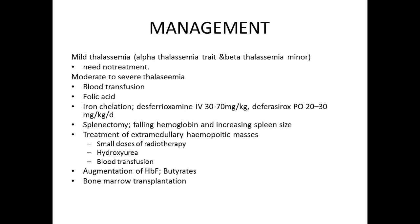When the spleen becomes hugely enlarged or the patient goes into repeated hemolytic crisis, splenectomy is advised. When hemoglobin is falling with increase in spleen size, splenectomy is recommended, along with appropriate vaccinations. For extramedullary hematopoietic masses, there are key options: small doses of radiotherapy, hydroxyurea, or frequent blood transfusion to suppress extramedullary erythropoiesis.